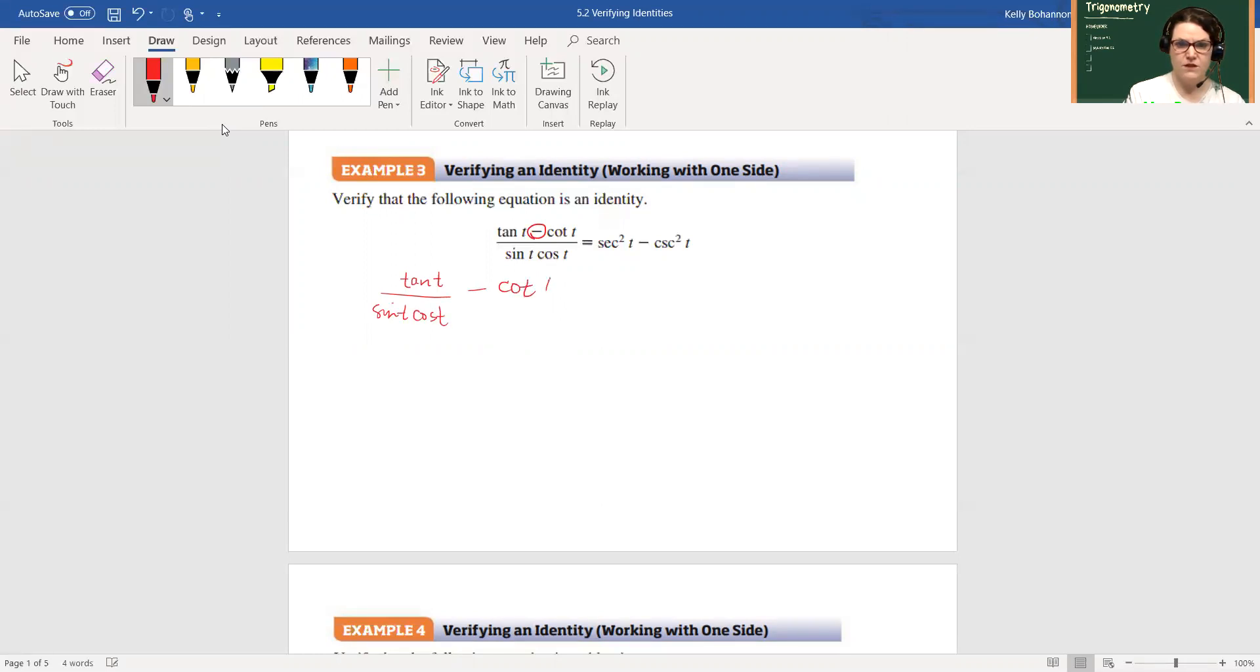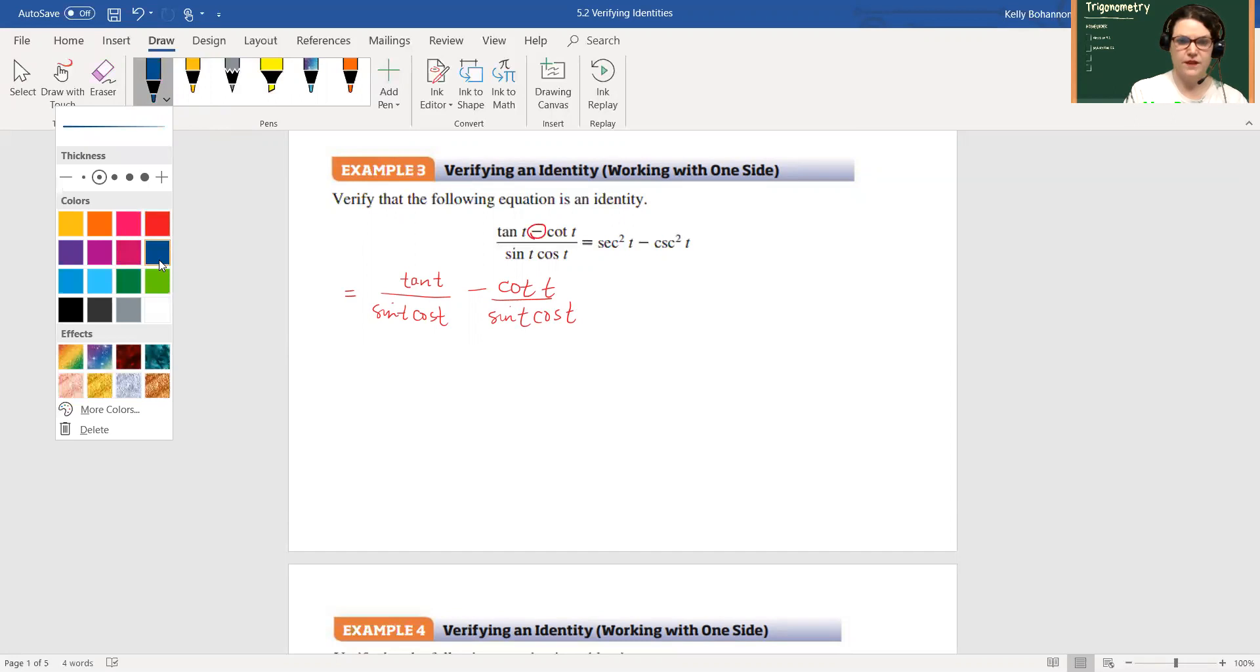And then that I could actually continue to rewrite a little differently, so I'm going to rewrite it as tangent of t times one over sine t cosine t minus cotangent t.